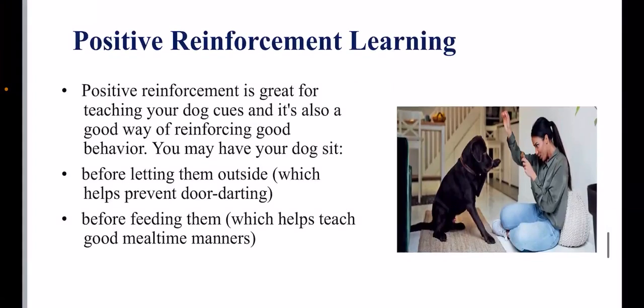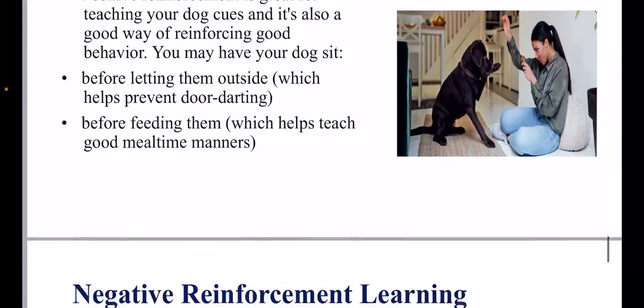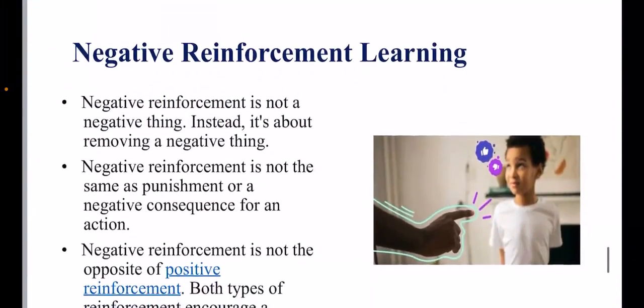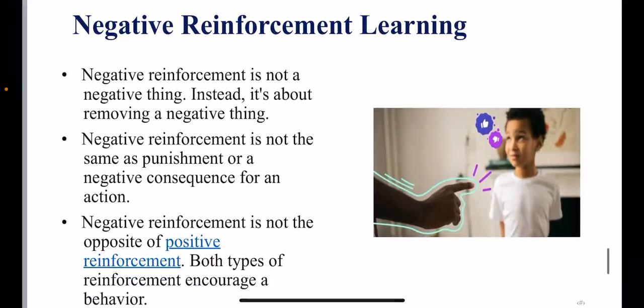So that will be positive reinforcement learning, and it will be good to train our dog. And there is another type, negative reinforcement learning, in which when we scold the child if that child behaves badly or wrong, then in the back of that mind, that child understands that if I behave so, then I will get punishment, so I will not behave like that.